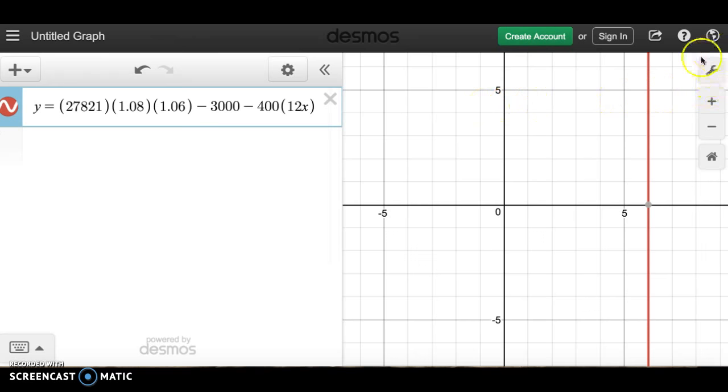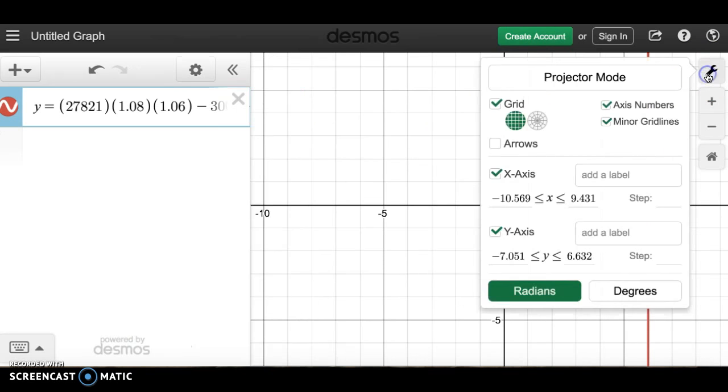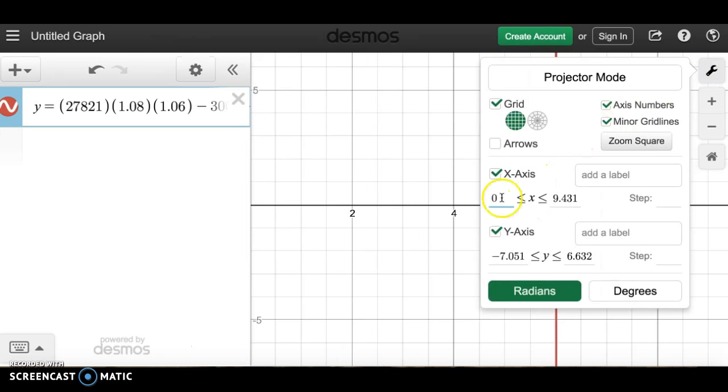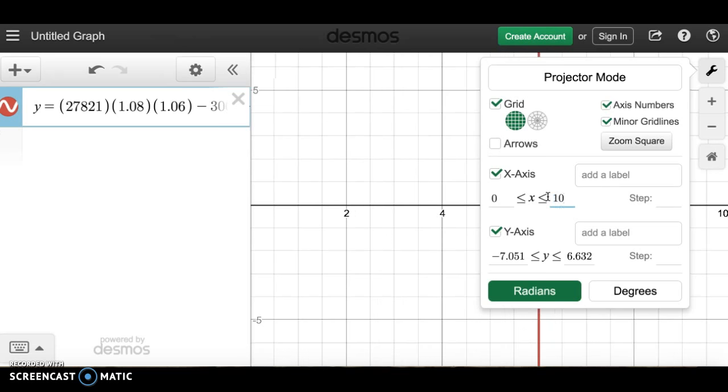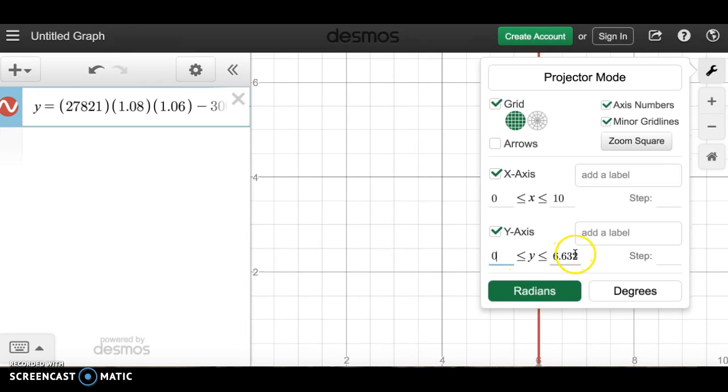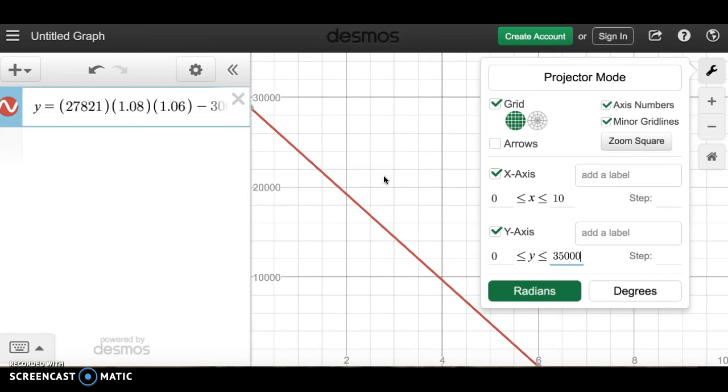So we go over to our wrench and we change the window. The X axis is always time, so we can start with zero because you can't go back in time. Zero is now and we can go 10 to 15 years in the future. 10 is probably plenty. Y axis is money, the value of the car, so we start with zero because it will never be worth less than zero. And the car's original price was $27,000, almost $28,000, so we suggest you go slightly higher than that so it stays on the graph. So I'm going to go up to $35,000 just to leave some room there.